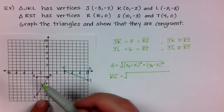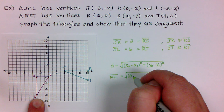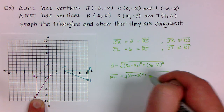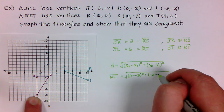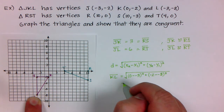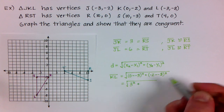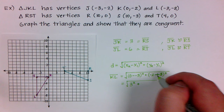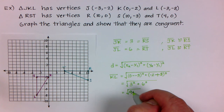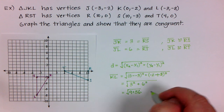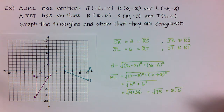For KL: K has x-value 0 and L has x-value −3, so (0 − (−3)) squared. Then K has y-value −2 and L has y-value −8, so (−2 − (−8)) squared. That gives us (0 + 3)² + (−2 + 8)² = 3² + 6² = 9 + 36. So the distance KL equals the square root of 45, which simplifies to 3√5.